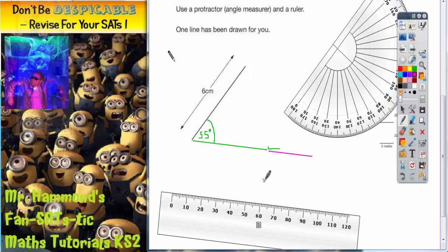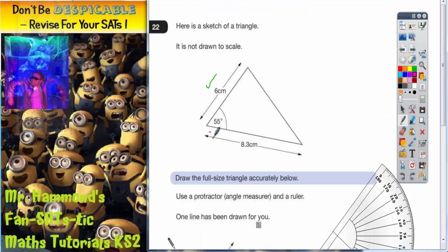All you've got to do then is write on your 8.3 centimeters. So as it stands right now, we have done our 55 degrees, so we can tick that off. We've done our 8.3 centimeters, so we can tick that off.